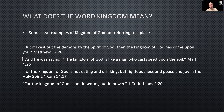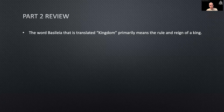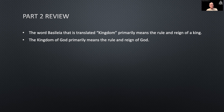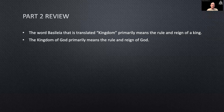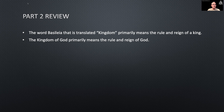Let's do a quick review of part two. We learned that the word 'basileia,' translated as 'kingdom,' primarily means the rule and reign of a king — that's its primary usage. The kingdom of God, therefore, primarily means the rule and reign of God. If 'kingdom' means rule and reign of the king, then 'kingdom of God' means rule and reign of God. We'll pick up in part three of session one next.